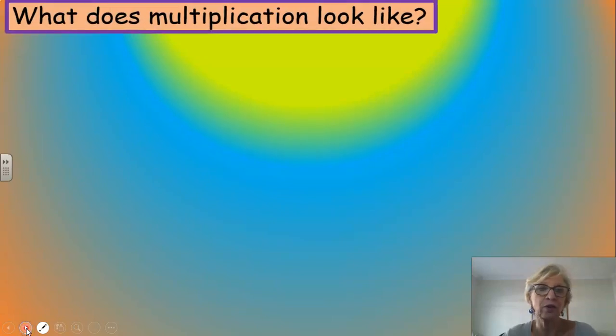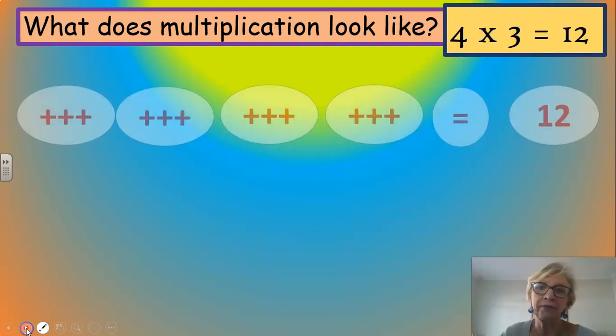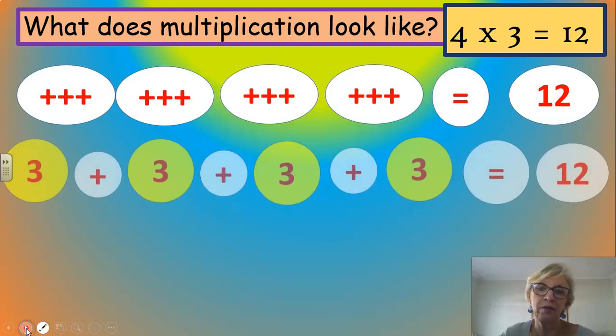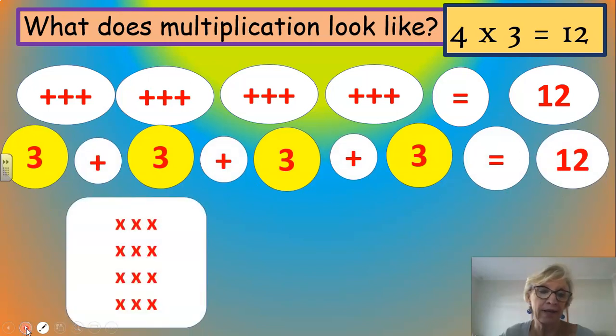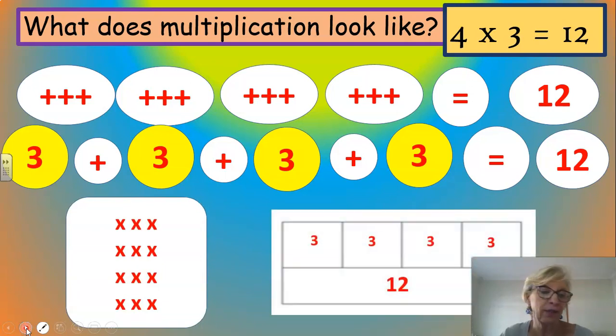And the answer obviously is 12. And now we have shown 3 times 4, or 4 times 3, using repeated addition. What does multiplication look like? We're going to now use an array. It's another way of drawing something to show 4 times 3 is 12. And then we have 4 3s in each in a little row, depicting the answer 12.